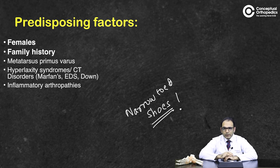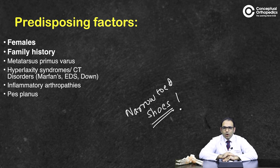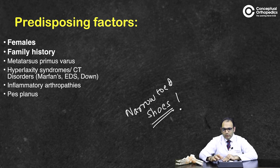Inflammatory arthropathies — specifically rheumatoid arthritis, gout, and psoriatic arthropathy — can also predispose an individual to hallux valgus deformity. Pes planus is another major factor; patients with flexible pes planus, or in adults the adult-acquired flat foot or posterior tibial tendon dysfunction, cause increased stresses on the first metatarsal and predispose the patient to hallux valgus.